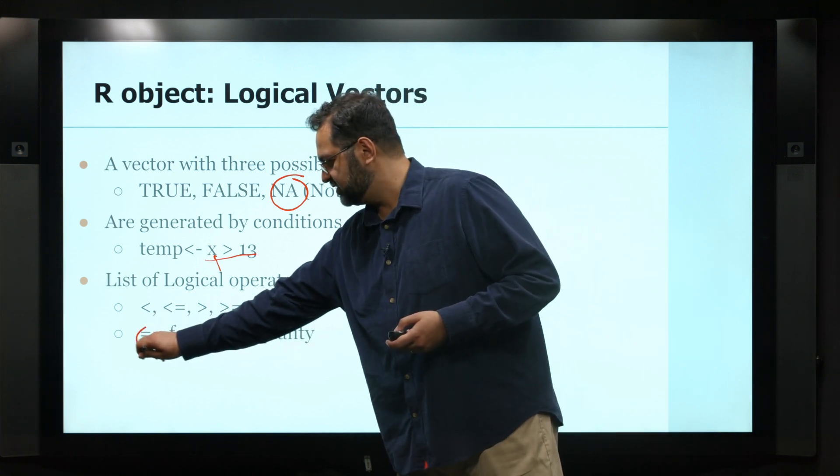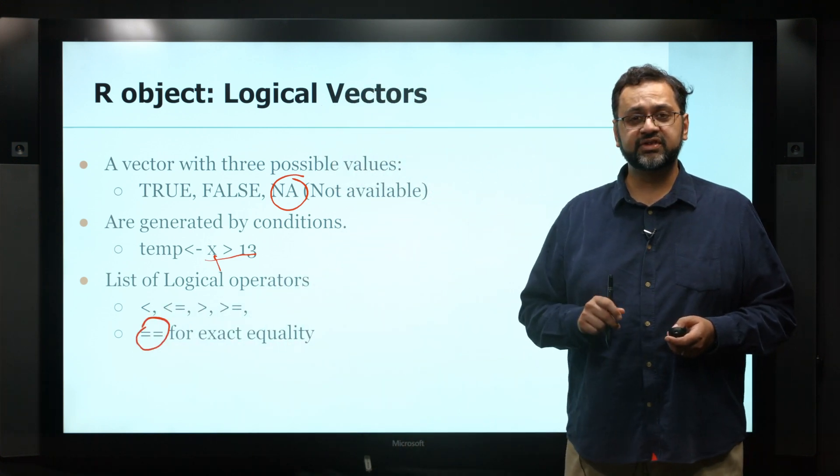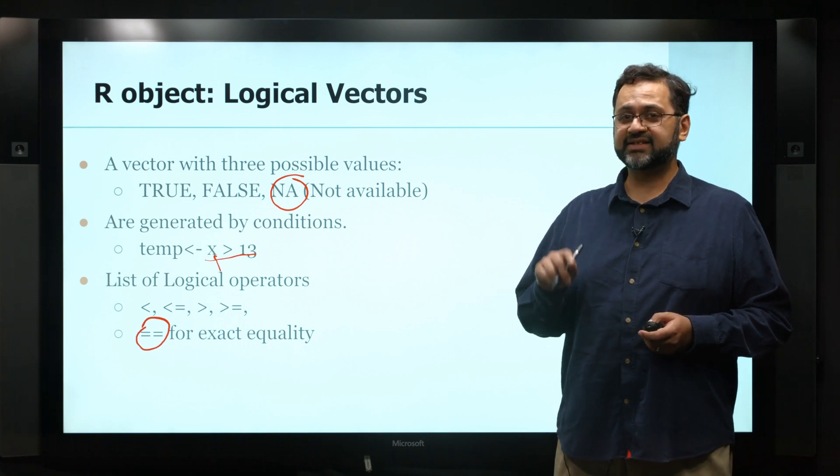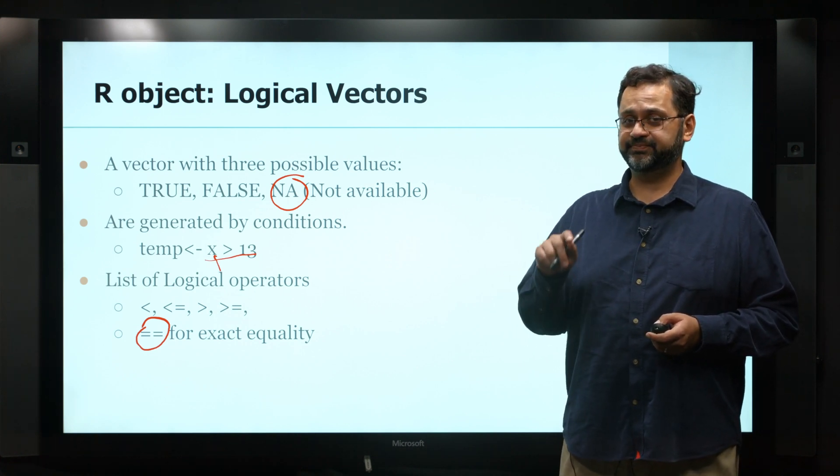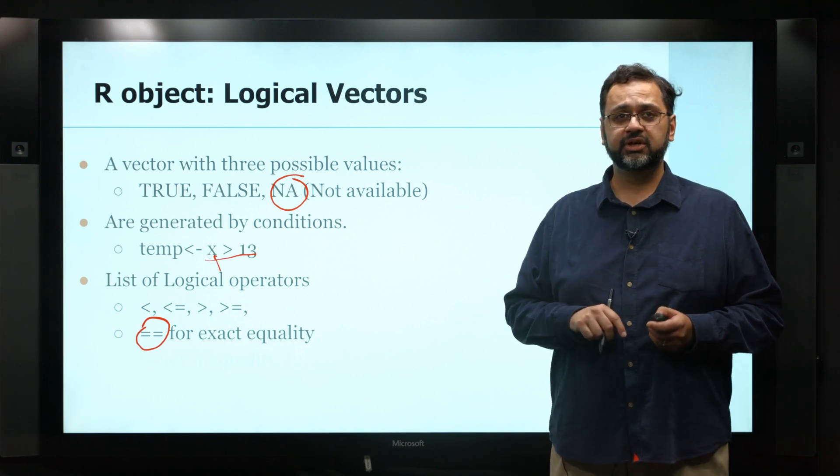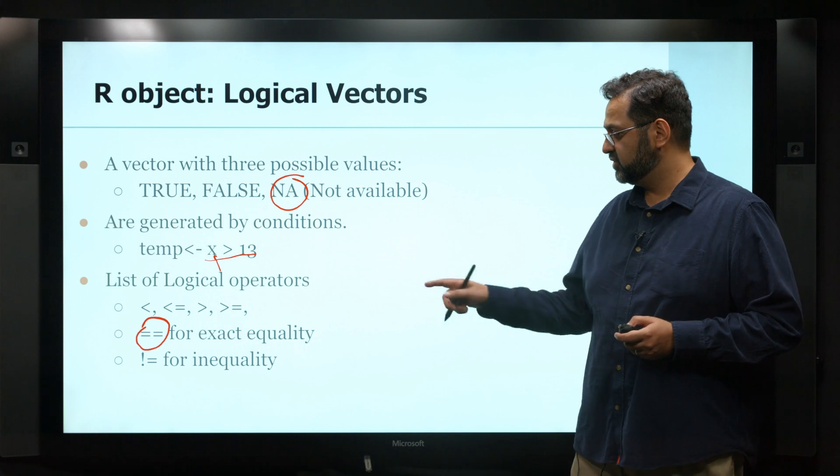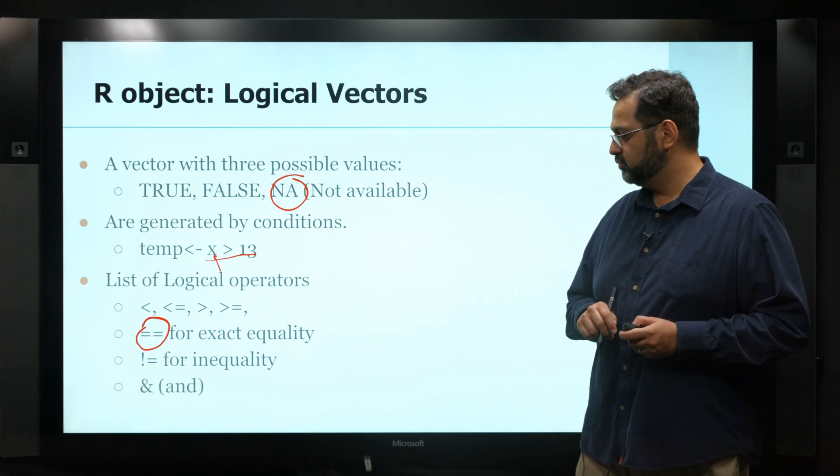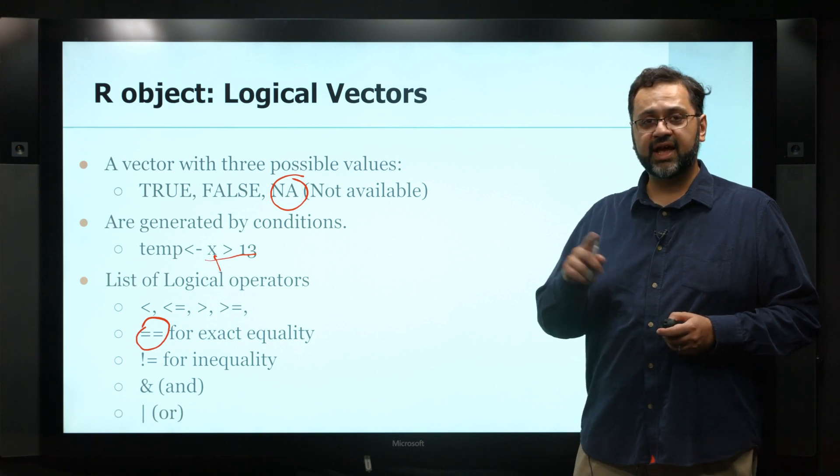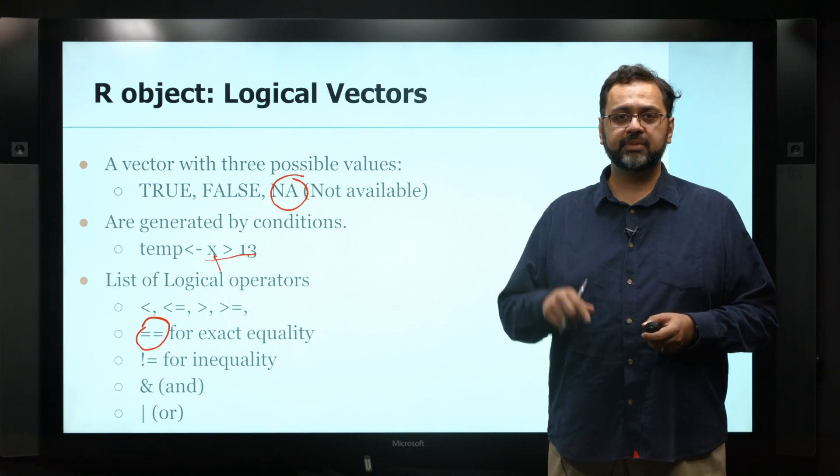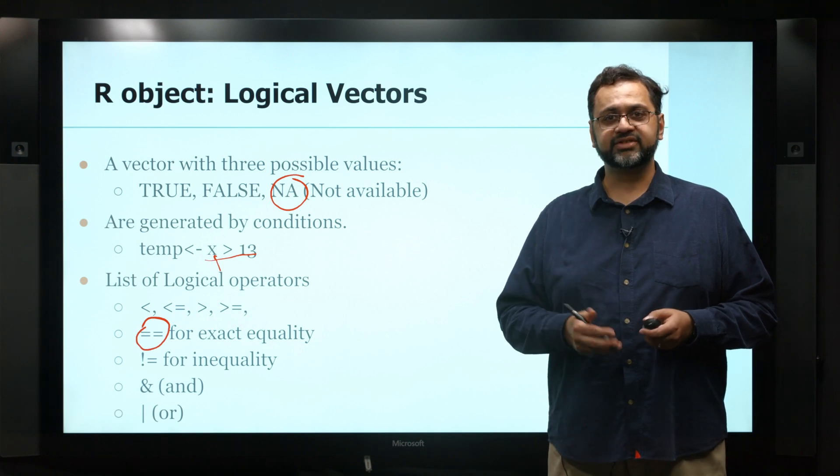Remember, these are two equal signs. Be careful - this is different than a single equal sign which is assignment. If you accidentally leave out one of the equal signs, you just reassigned your entire variable. You can say not equal to. You can also use Boolean operators - an AND to represent two different conditions, or a pipe, vertical bar, as an OR statement.